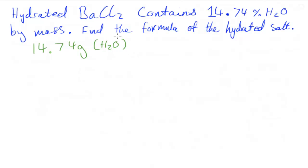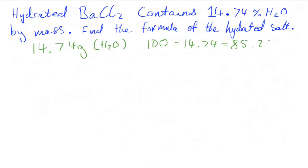This also means that the mass of BaCl₂ is going to be 100 minus 14.74, which equals 85.26 grams. So 85.26 grams would be the mass of BaCl₂ in this hydrated compound.